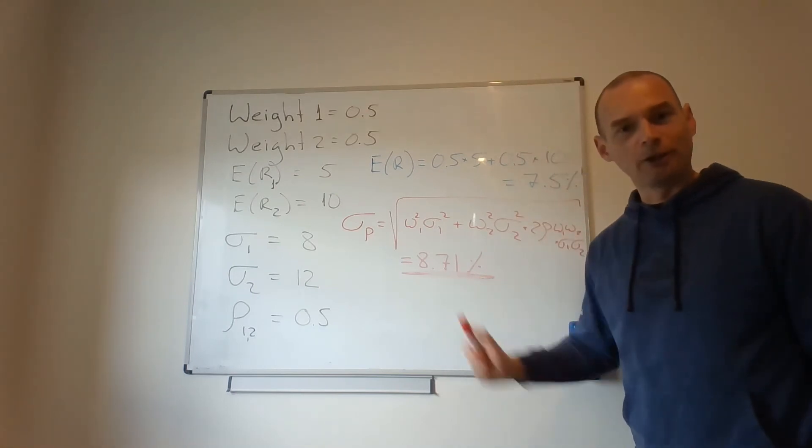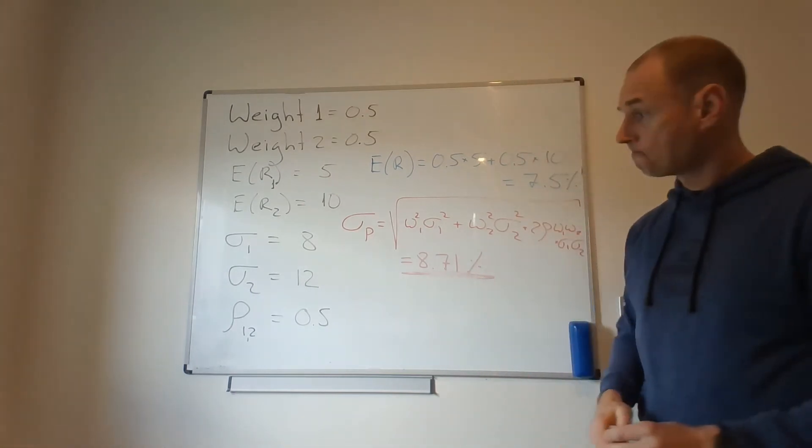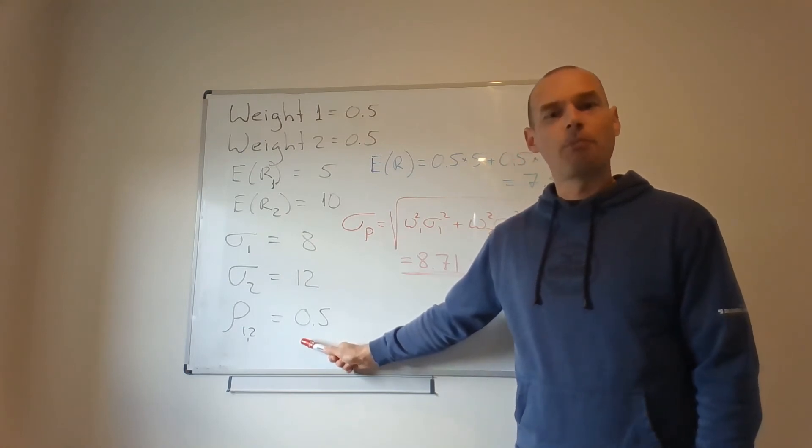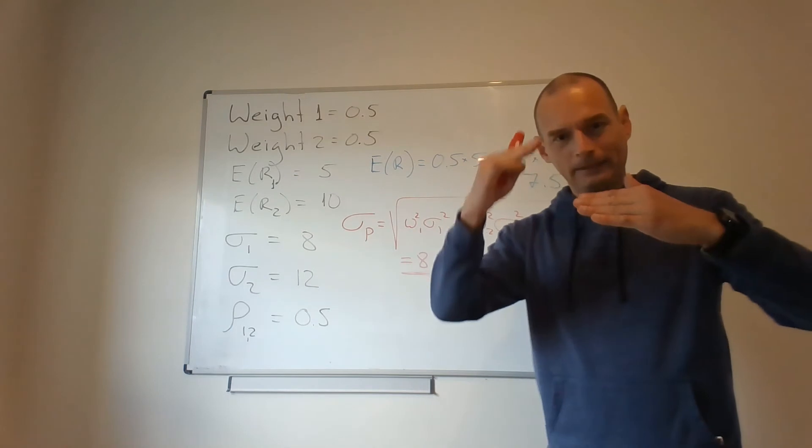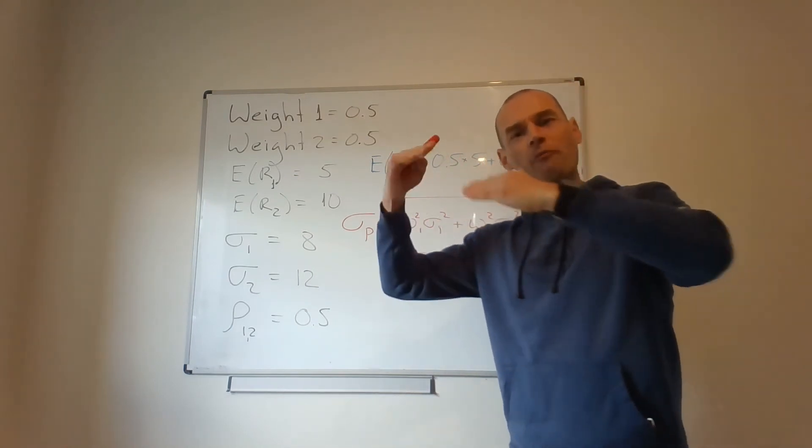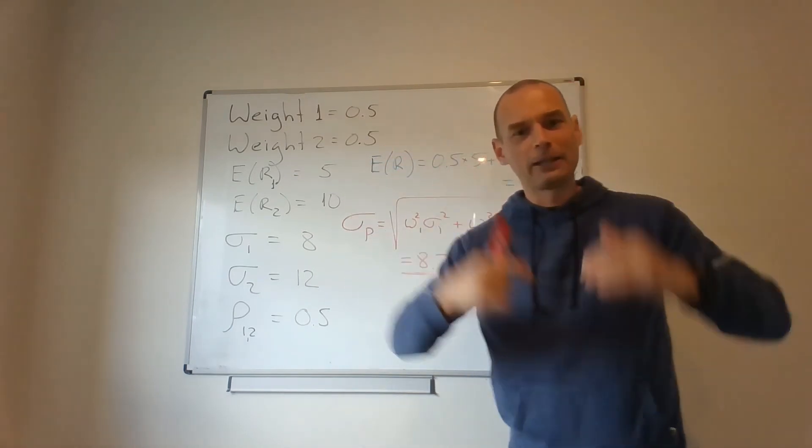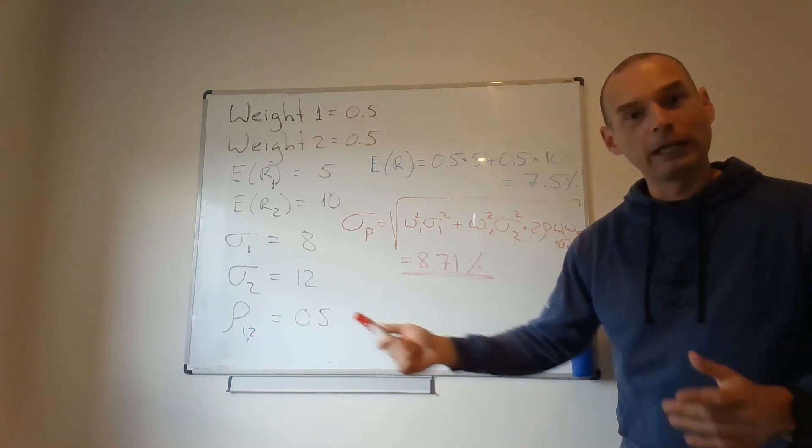So instead of 10, you get a significantly lower number. Why? Because even though your correlation is positive, it's not 1. It's not even close to 1. So securities do co-move, but they don't co-move perfectly. They do cancel each other's volatility out a little bit.